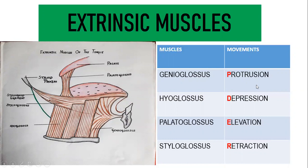For movements, remember the muscles in alphabetical order — GHPS: genioglossus, hyoglossus, palatoglossus, styloglossus — and remember the acronym PDER. Genioglossus: protrusion of the tongue. Hyoglossus: depression of the tongue. Palatoglossus: elevation of the tongue. Styloglossus: retraction of the tongue.